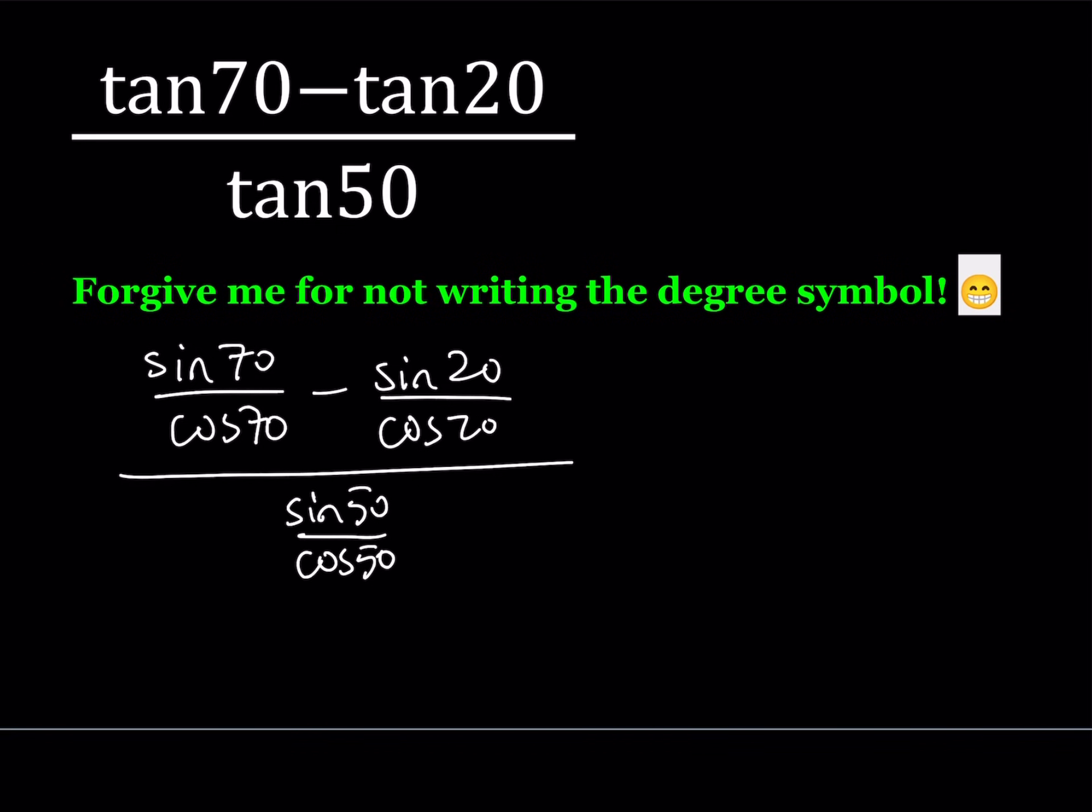Again, I'm not writing the degree symbol, but it's understood. So what can I do with this expression? Well, first of all, I can make a common denominator. Let's go ahead and make one. So to make a common denominator, I should multiply by cosine 20 here and cosine 70 here. So I get sine 70 times cosine 20 minus sine 20 times cosine 70. And that is divided by cosine 70 times cosine 20.